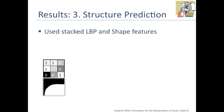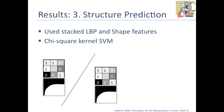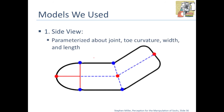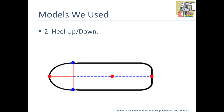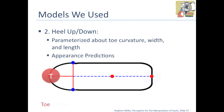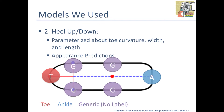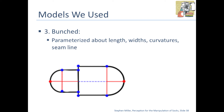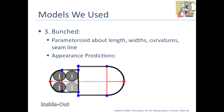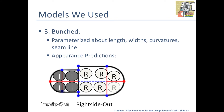For predicting the structure of the sock, we use stacked LBP and shape features and trained a chi-squared kernel SVM. The side view model has parameters specifying how it can move, and it predicts the location of a toe, ankle, heel, and some generic patches. Similarly, the heel-up and heel-down model predicts a toe, ankle, and generic patches — we don't assume we can find the heel as it may be occluded. For the bunched case, we allow a seam line specifying where it's folded over, and our predictions look for inside-out patches on one half and right-side-out patches on the other — the key being that a bunched sock has a split between inside-out and right-side-out regions.